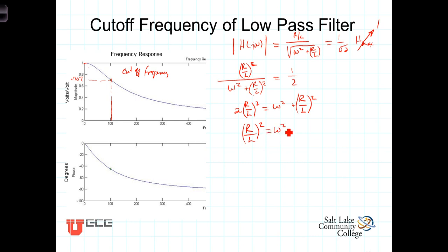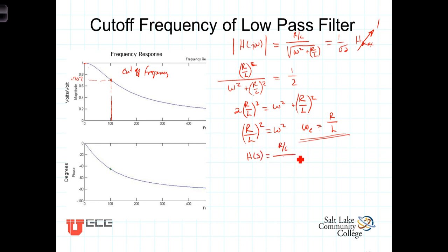Taking the square root of both sides, we find that omega C, the cutoff frequency, is simply equal to the ratio of resistance to inductance. Recall that the transfer function for this filter was H of S equals R over L divided by S plus R over L. We noted that the constant in that form has significant meaning — we now see it is just the cutoff frequency. So the transfer function in its standard form can be written as omega sub C over S plus omega sub C.